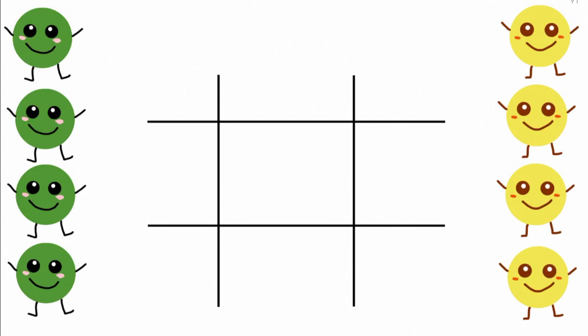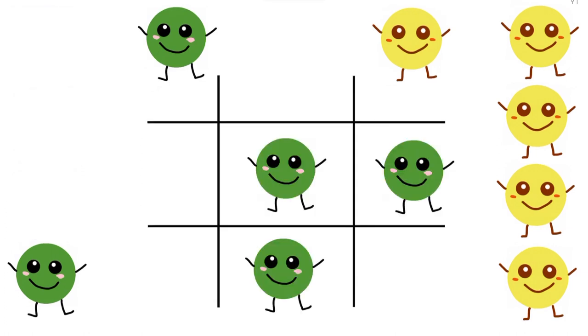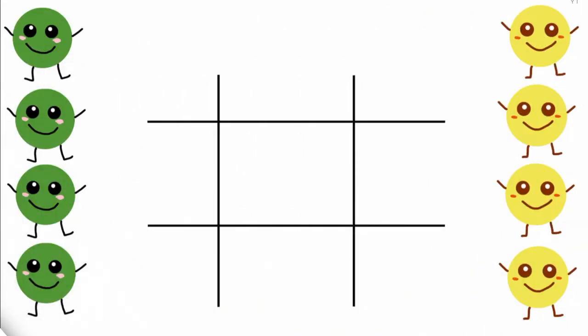Now to get back to Mendel and his peas. He began by trying to cross a green pea plant with a yellow pea plant. As a result, he got four green plants, telling us that the green trait of the pea is dominant over the yellow trait.